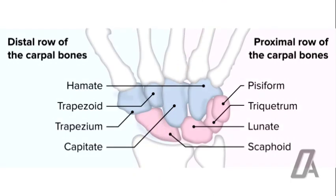The carpal bones are arranged in two rows. In the distal row lies the trapezium, trapezoid, capitate, and hamate. Whereas in the proximal row lies the scaphoid, lunate, triquetral, and pisiform.